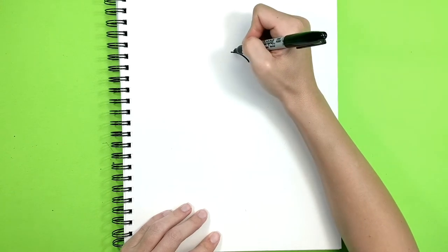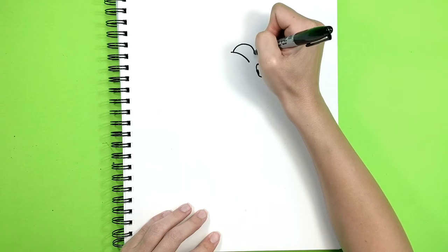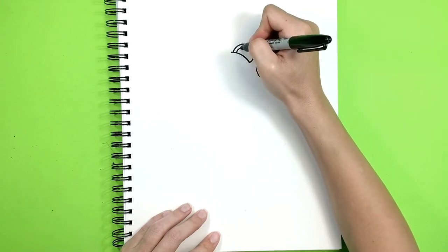This is gonna be like a half circle shape. One eye, draw another half circle right there in the middle.